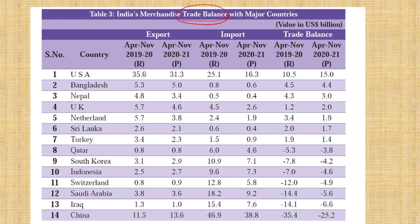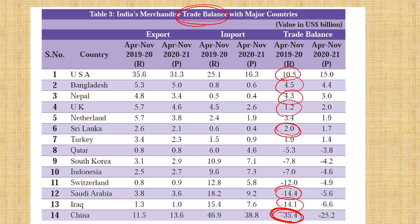And trade balance — among which countries we have trade. We have a positive trade balance with USA, Bangladesh, Nepal, and UK. Negative trade balance is with Saudi Arabia, because we import a lot of oil, and Iraq. China is the maximum trade imbalance. Even with Sri Lanka we have a positive trade balance now. But with Iraq, Saudi Arabia, and China, we have a high negative trade balance.